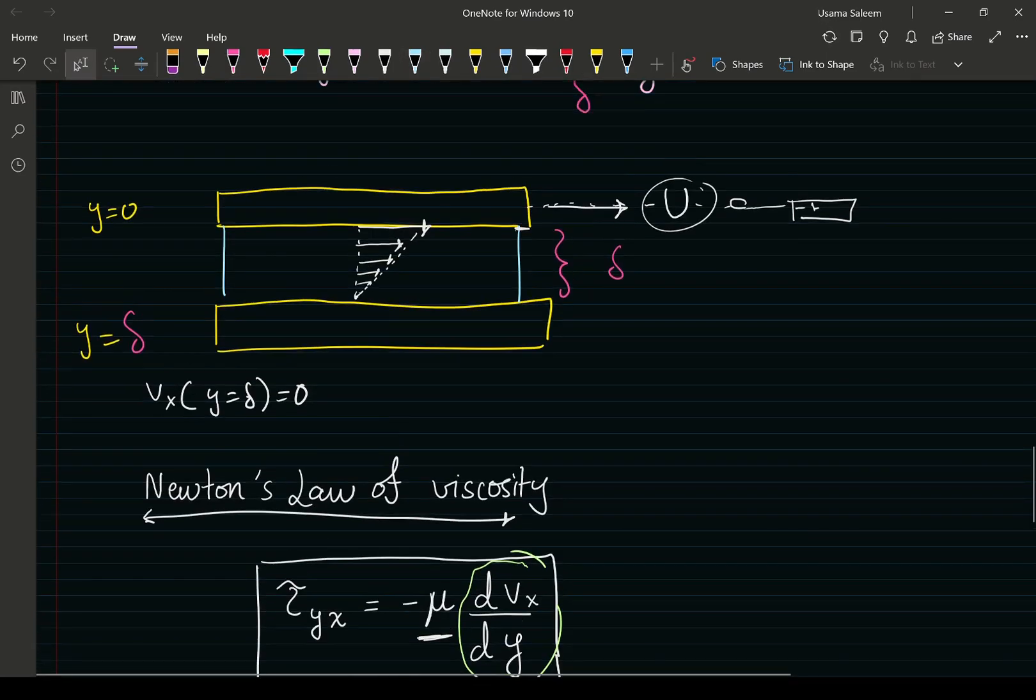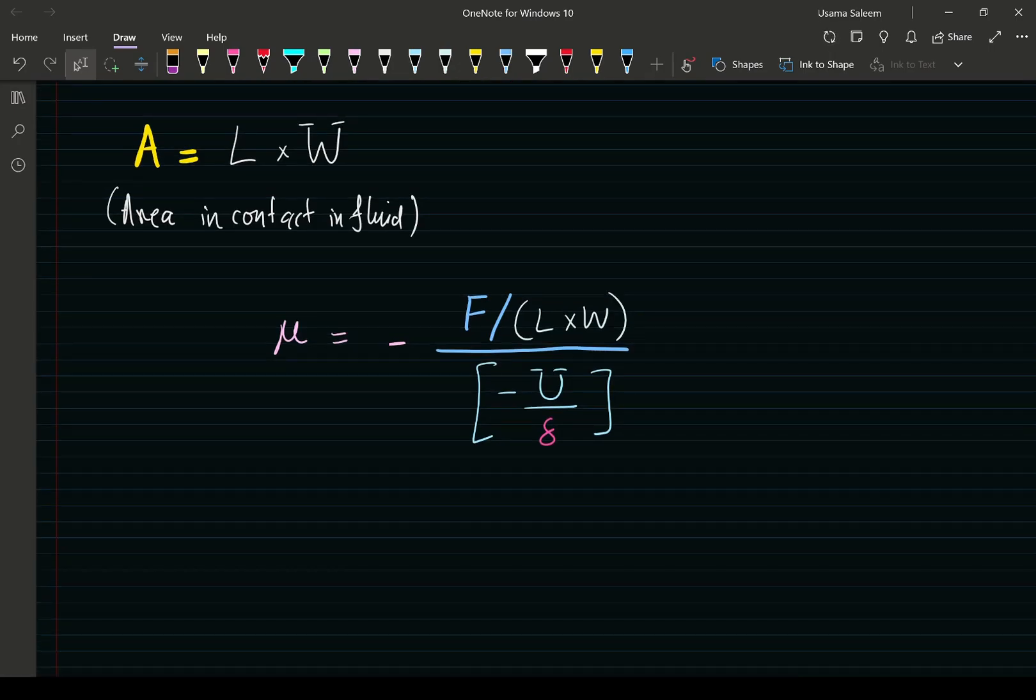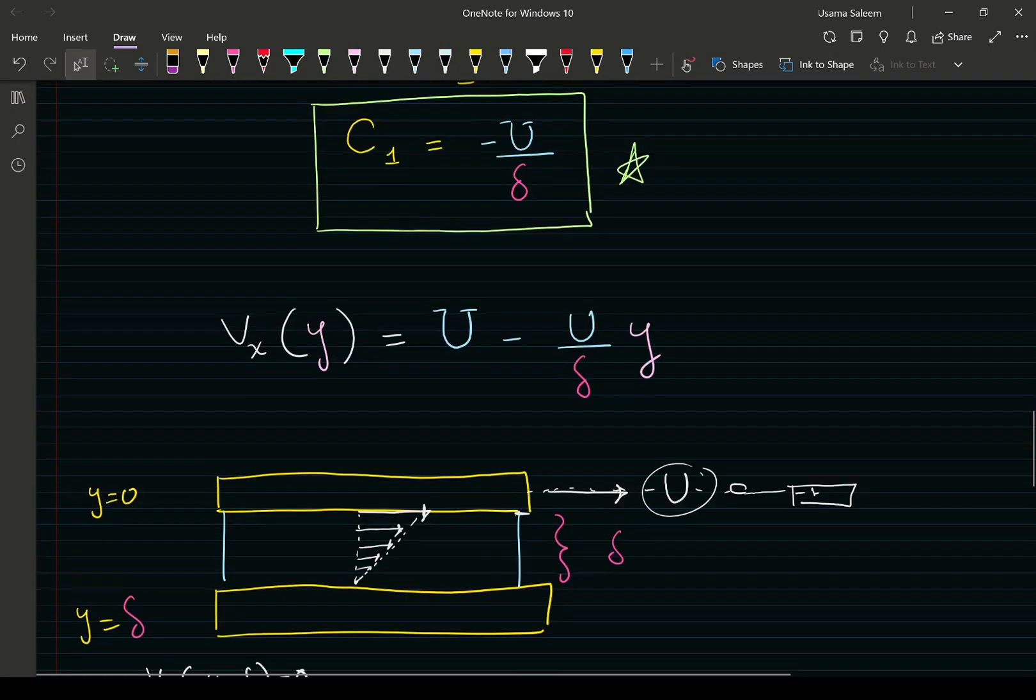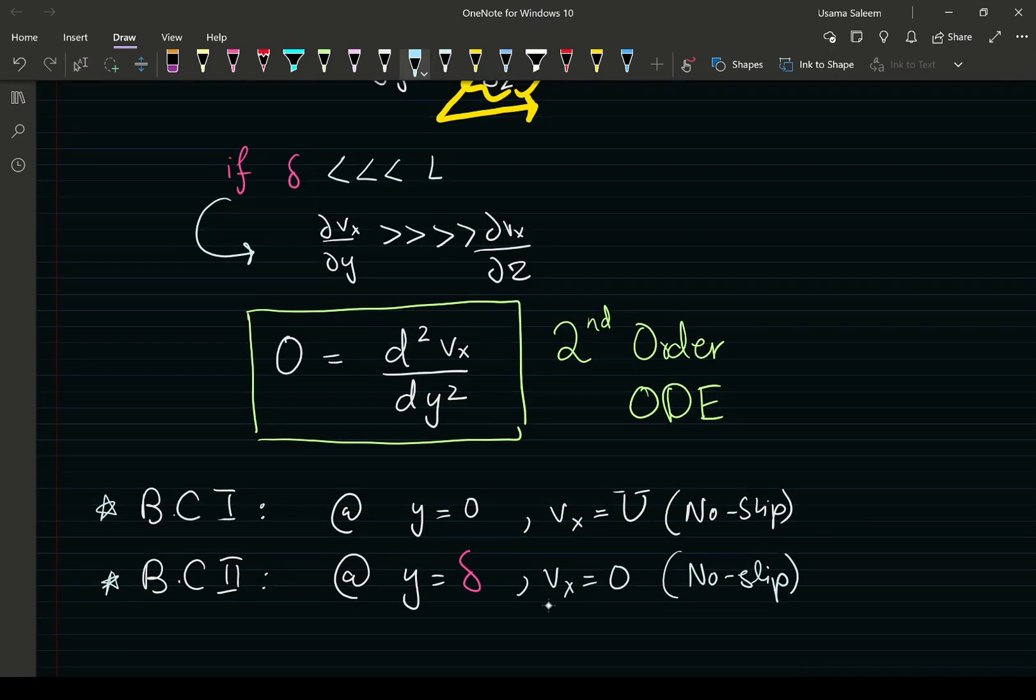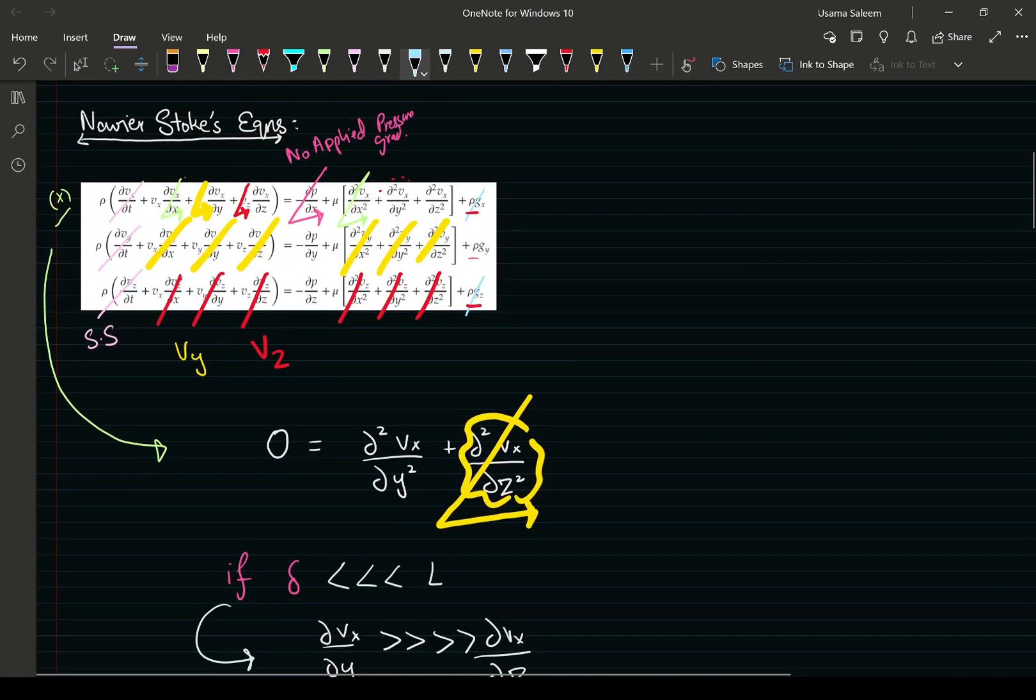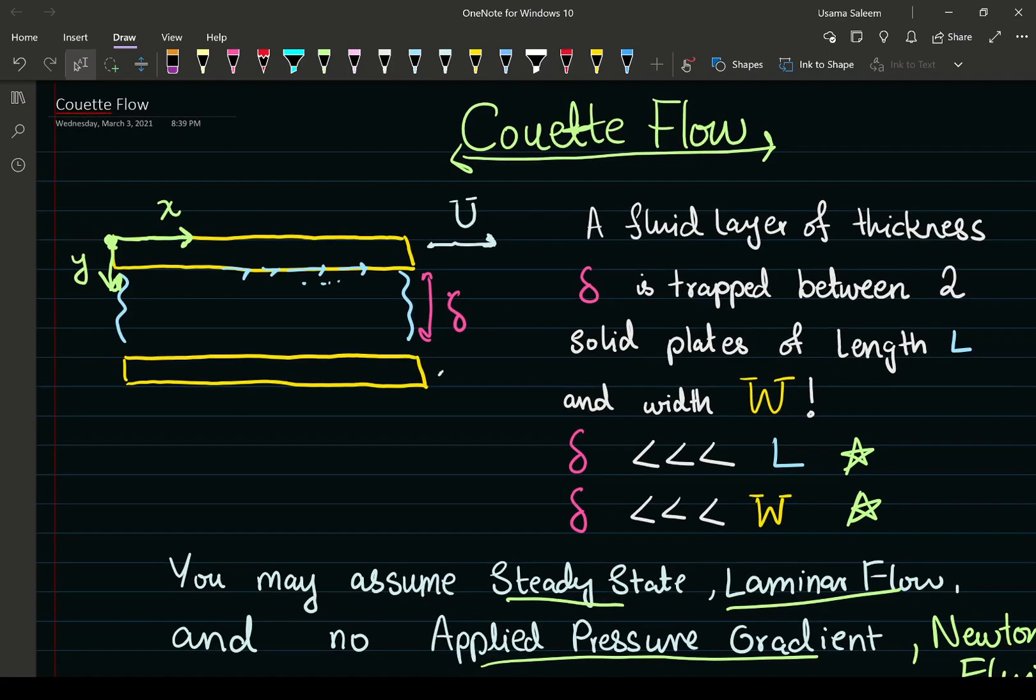That's pretty much all I have for you guys on Couette flow. If you want to make this problem even more interesting, instead of having a stationary bottom plate, try solving with both plates moving at different velocities. See how that affects your velocity profile. I'll give you a hint - it's still going to be linear.